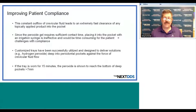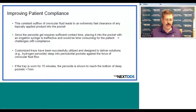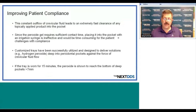We have to make something easy for the patient to comply with, and we have to be able to hold something in the pocket to overcome the sulcular fluid flow. The constant outflow of crevicular fluid leads to extremely fast clearance of any topically applied product. Since the peroxide gel requires sufficient contact time, placing it into the pocket with an irrigation syringe would be too time-consuming for the patient — meaning they won't comply. Customized trays have been successfully utilized and designed to deliver hydrogen peroxide deep into periodontal pockets against the force of crevicular fluid flow. If the tray is worn for 15 minutes, the peroxide is shown to reach the bottom of pockets greater than seven millimeters.